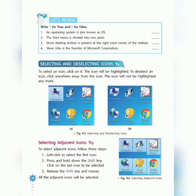Now we will solve the true/false questions related to date components. The first one: an operating system is also known as OS — that is true. The second: the start menu is divided into two parts — that is also true. The third: the show desktop button is present at the rightmost corner of the taskbar — that is also true.